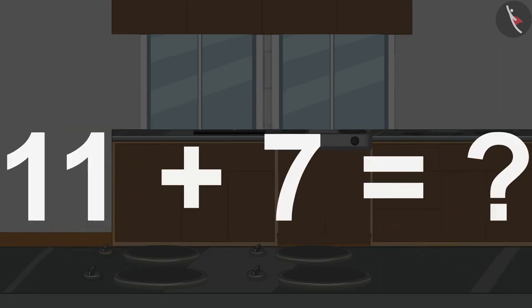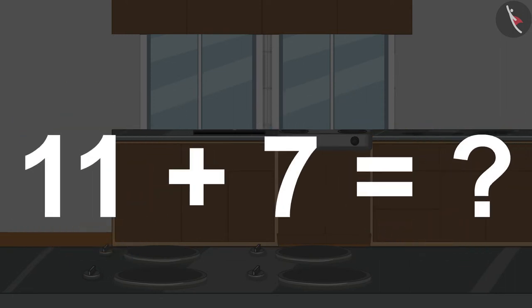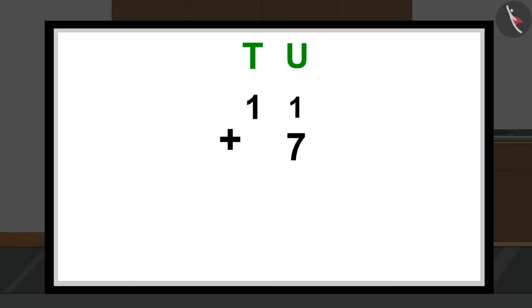To solve this question, we will first write both the numbers like this in a vertical addition format. Then we will add the numbers written in the unit section. 1 plus 7 is equal to 8. We will write that under the unit section like this.